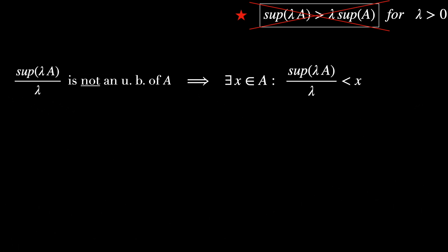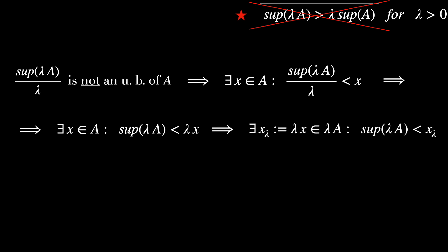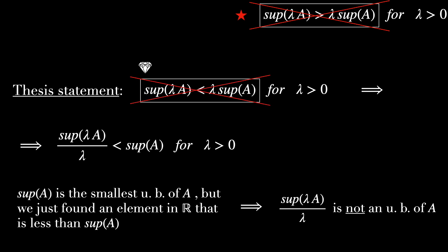In mathematical terms, there must exist an element X in A such that the supremum of lambda A over lambda is less than X. Multiplying both sides by lambda, we get the supremum of lambda A is less than lambda X, which means there exists an element X_lambda in lambda A, defined as lambda X, such that the supremum of lambda A is less than X_lambda. But if we found an element in lambda A greater than its supremum, then the supremum cannot be an upper bound — which contradicts its own definition.